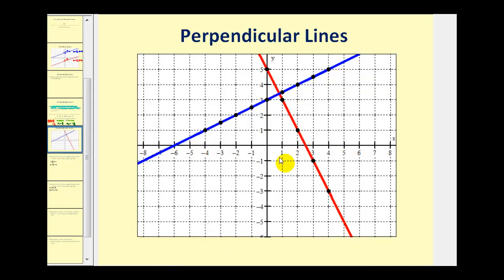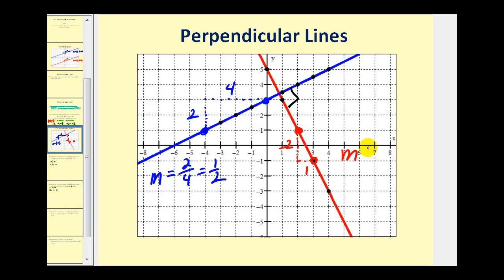Let's look at one more graph. We should recognize that these two lines are perpendicular, meaning they form a right angle at their intersection. Looking at the blue line, using two convenient points, we go up two and right four, so the slope is two-fourths or one-half. For the red line, using two points, we go down two and right one, so the slope is negative two over one. In this form it's easy to see these two are negative reciprocals — flip the blue slope over and change the sign, and you get the slope of the red line. Therefore these two lines are perpendicular.